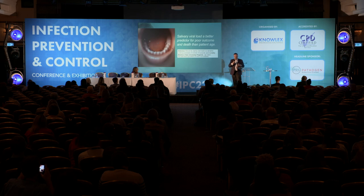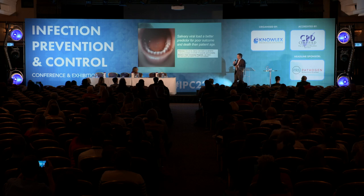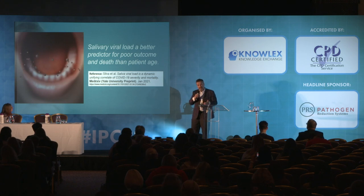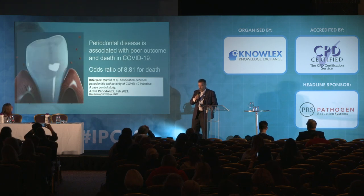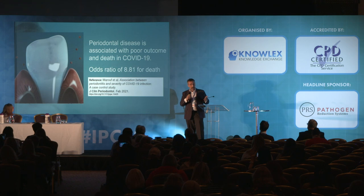Importantly, Yale University, who have done a lot of work analysing saliva in the context of the pandemic, have reported that high viral load in saliva is a predictor of poor outcome — and they say it's an even better predictor of death than the patient's age. And here is the missing link between the mouth and the blood: it's gum disease.